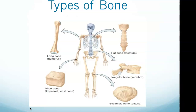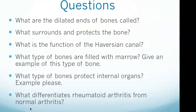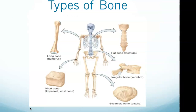Short bones, shown on the bottom left, are wider than they are long. Examples include the carpals and tarsals. Flat bones, on the top right, provide protection to internal organs — answering bullet point five — and examples include the sternum, ribs, and pelvis. Irregular bones vary in shape; examples include vertebrae, skull, knee, and elbow bones.